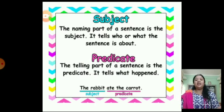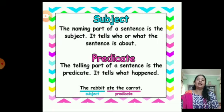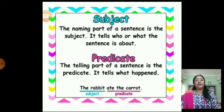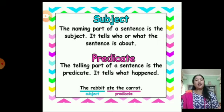Once again, the naming part of the sentence is the subject — it tells who or what the sentence is about. The telling part of the sentence is the predicate — it tells what happened. For example, 'The rabbit ate the carrot': 'the rabbit' is the subject and 'ate the carrot' is the predicate. Thank you for listening carefully. Hope you have understood the chapter very well.